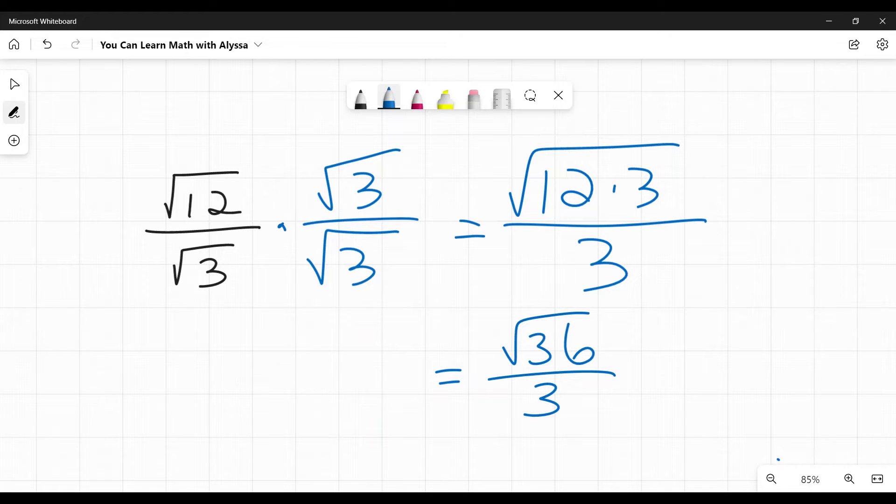So on top, we have the square root of 36. On bottom, we have three. And the square root of 36, hey, that is a perfect square. Woohoo! The square root of 36 is six. Six divided by three is two. In this case, we can go all the way down to a single number. Just be prepared. This is not common, but it's a good place to start to show the principle involved. So again, we got rid of the radical and then we simplified as much as possible.